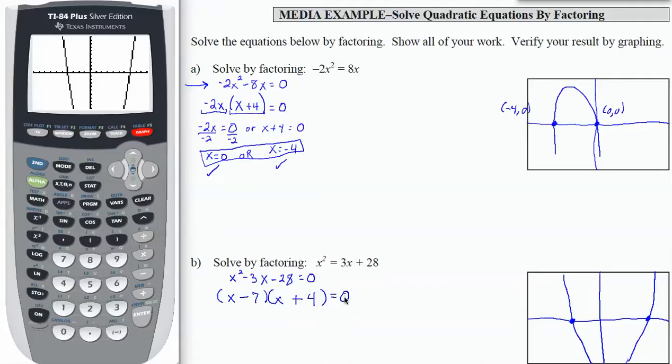Remember to set this equal to 0. Once I have it set equal to 0, I can set each of my factors to 0. So I have x minus 7 equals 0 or x plus 4 equals 0. That means x equals 7 or x equals 4.